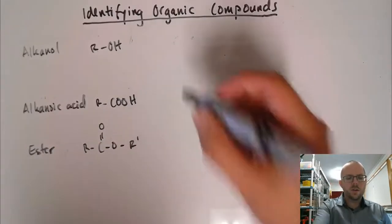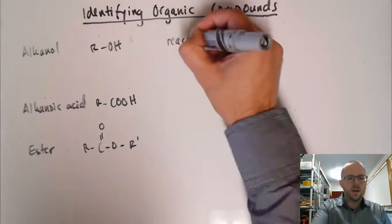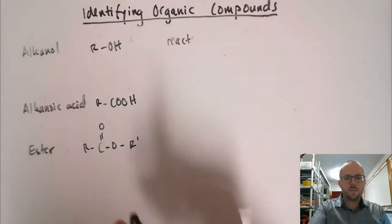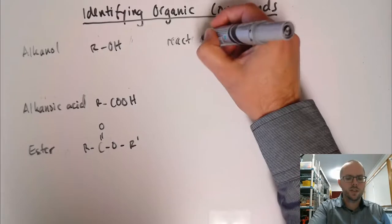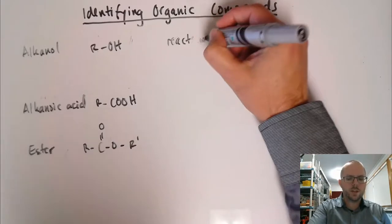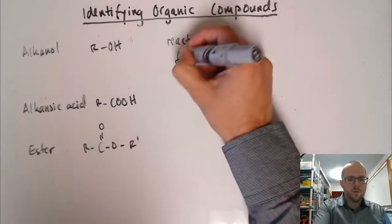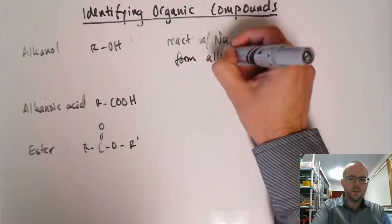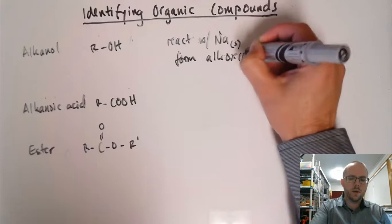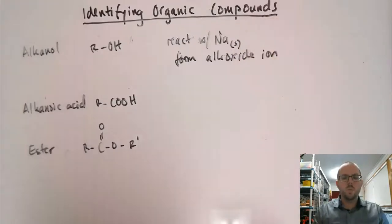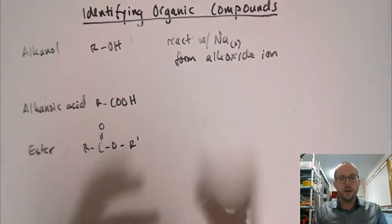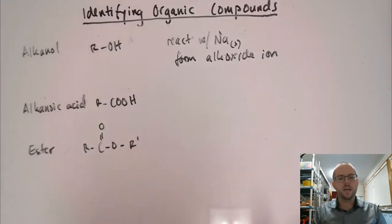The alkanol, the way that we can distinguish or identify that is to react with sodium metal. And then we form what's called an alkoxide ion. It's like water will react with sodium metal to form hydroxide. Alkanols will react with sodium metal to form an alkoxide ion, for example ethoxide, which is CH3CH2O minus. Very strongly basic, much more so than hydroxide.